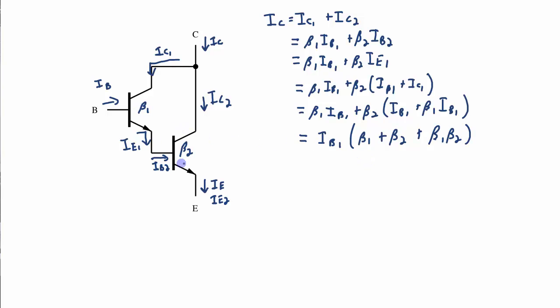Now if both of these transistors are manufactured on the same IC, I can manufacture in such a way that I can get the betas to be basically the same. So if beta 1 is equal to beta 2, and if I just call that beta.